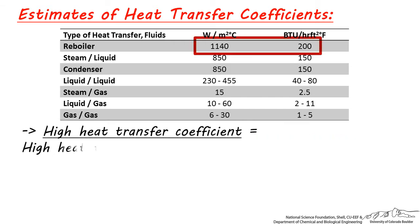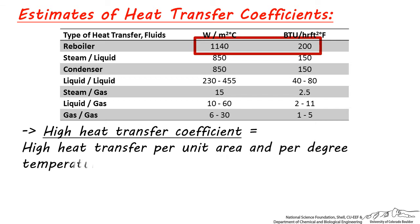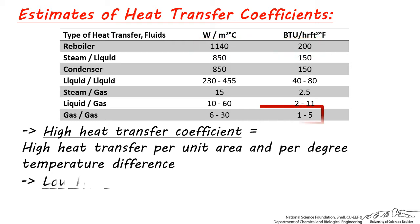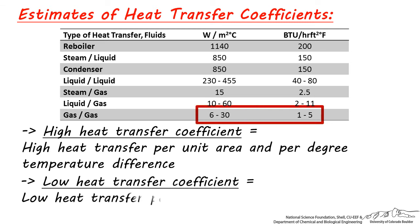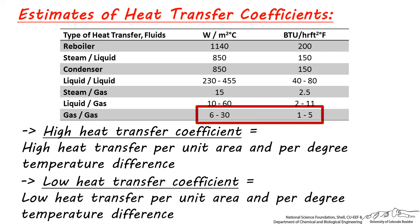A high heat transfer coefficient value represents a heat exchanger which has the potential to transfer a lot of heat per unit area and per degree of temperature difference. A low heat transfer coefficient means that little heat will be transferred per unit area and per degree of temperature difference, so a larger area or a higher temperature driving force must be used.